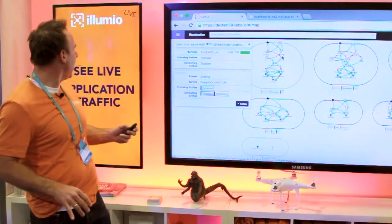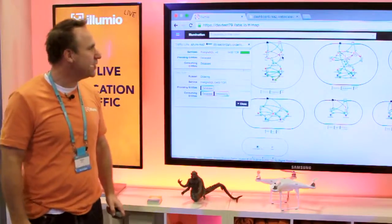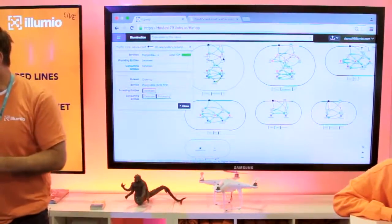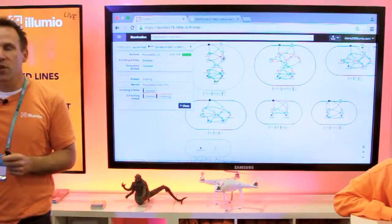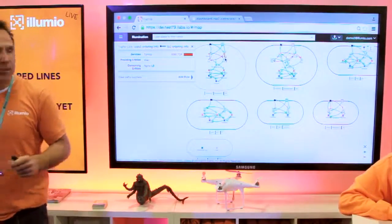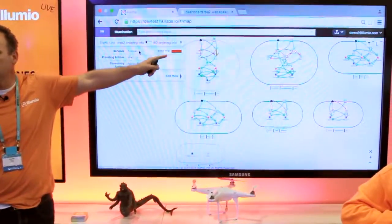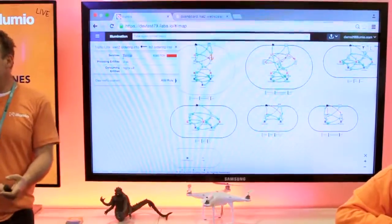The first thing is, in illumination, we're showing you live application traffic. A red line indicates that there's a flow that we have detected, but you have not written a security policy that addresses it. Anoop just clicked on that line. And we now see this traffic coming in from the load balancer to the web tier. Interesting information.